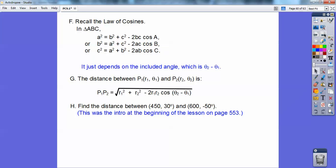So find the distance between 450 and 30 degrees and 600 and negative 50 degrees. So just plug them in, you guys, and notice it's negative 50 minus 30, which is negative 80, and you crank all that out, and you should get approximately almost 685 feet.